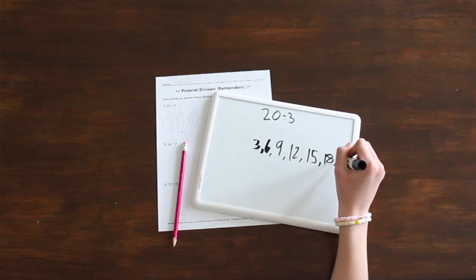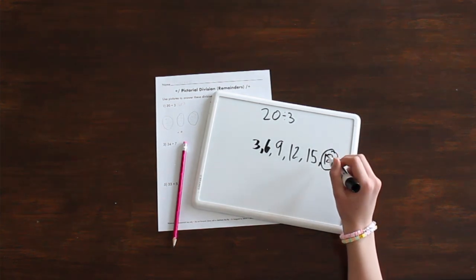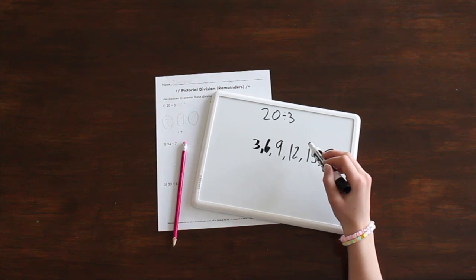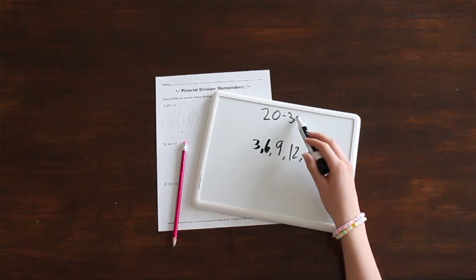This can be kind of a tricky concept, but I think division with remainders really helps move into long division. You can show division using pictorial methods and abstract methods. My personal favorite is if you can get to the point where the students can make a multiple list and then they can see which number is closest to the number without going over.